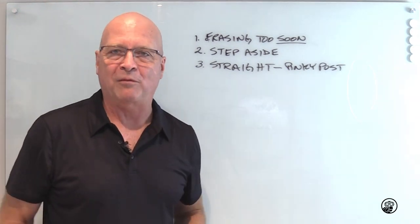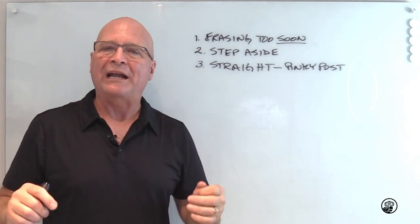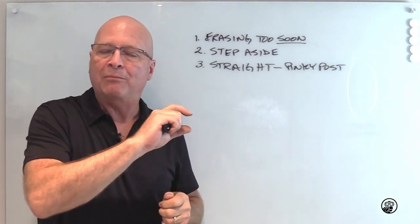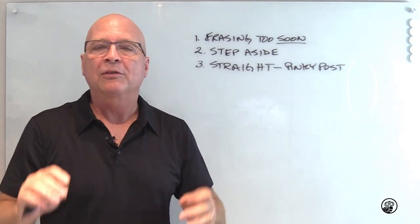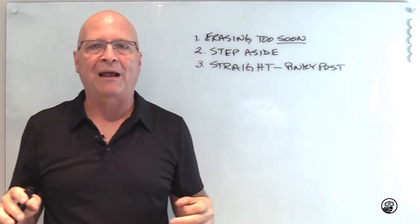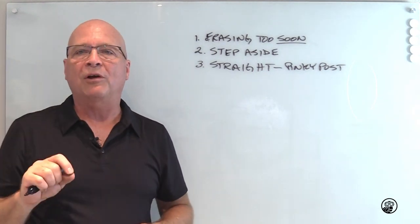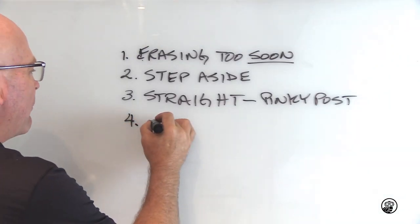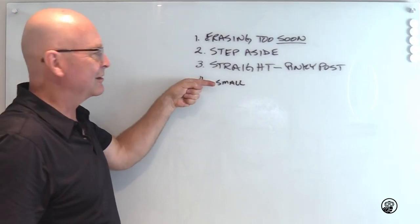The fourth problem people have while whiteboarding is writing too small. They're not putting the font size appropriate to the room. The room is the most important. If you're in a little conference room, you can do the smallest font, which is one finger size. So people will write small, it's one finger size.